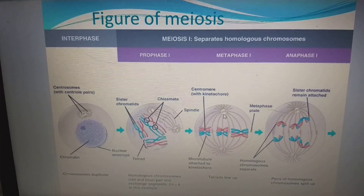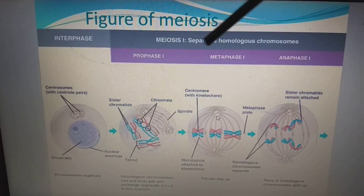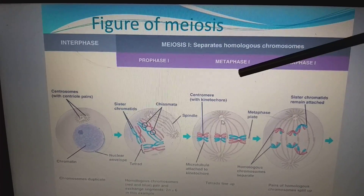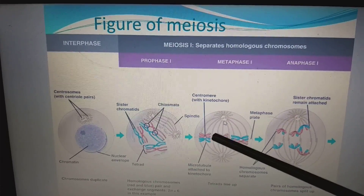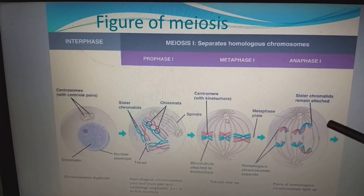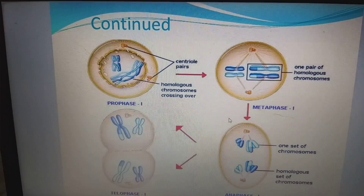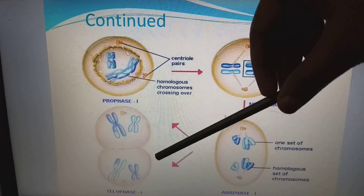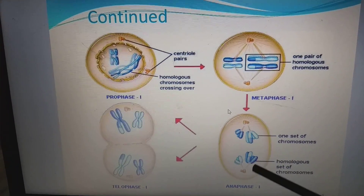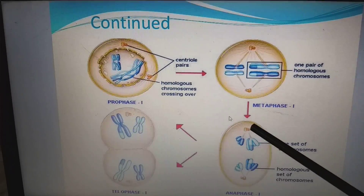Looking at the figures of meiosis: during interphase we have G1, S, and G2. In meiosis I — separation of homologous chromosomes — we have prophase I, where crossing over and chiasmata formation take place; metaphase I, where homologous chromosomes align in the center; anaphase I, where homologous chromosomes split apart; and telophase I. In humans, 23 chromosomes go to one side and 23 chromosomes go to the other side, resulting in a reduction in chromosome number in each cell.